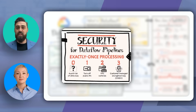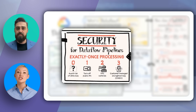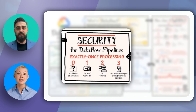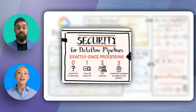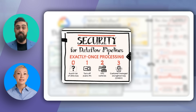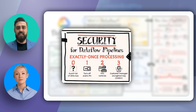Worried about data security? How does Dataflow keep your data safe, Ada? Dataflow ensures security through exactly-once processing, which avoids data loss. It also allows you to turn off public IPs for added security, implement VPC controls, and use customer-managed encryption keys (CMEK) for data encryption. So it's secure by design? Exactly. Security is a top priority for Dataflow.